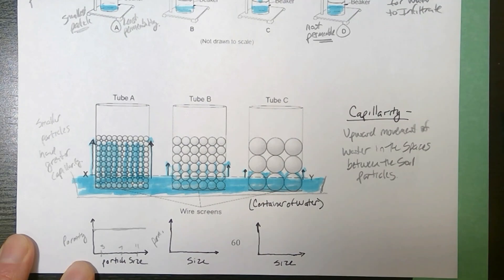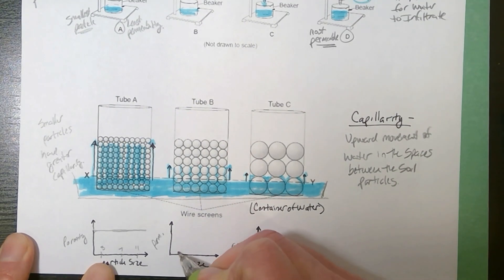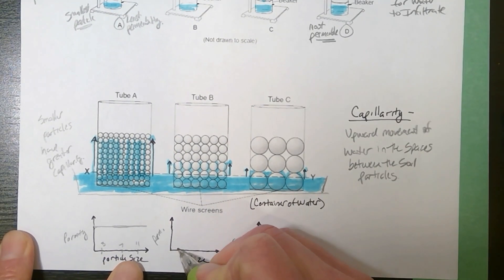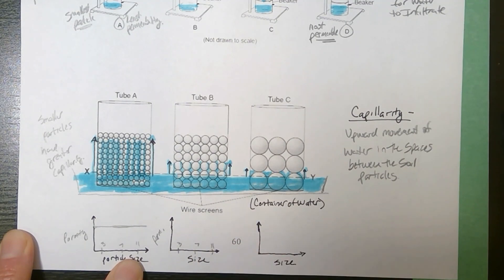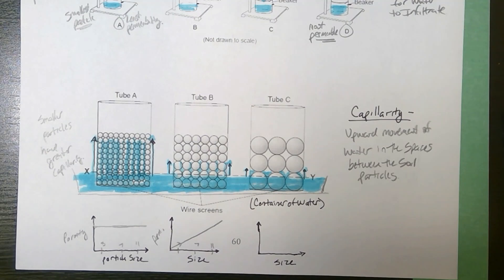Now, if I'm looking at permeability, if you went from small, say, 3 to 7 to 11 millimeter beads, the larger beads have bigger spaces. So as size increases, permeability increases.